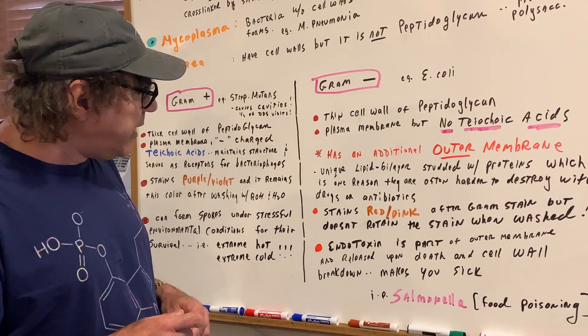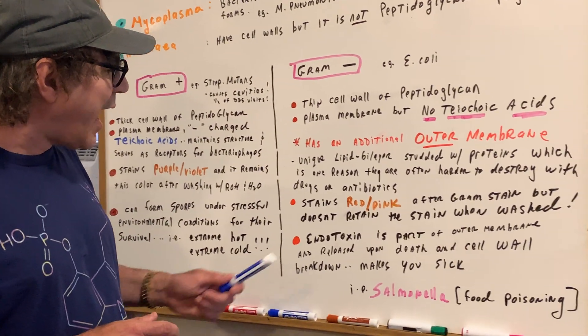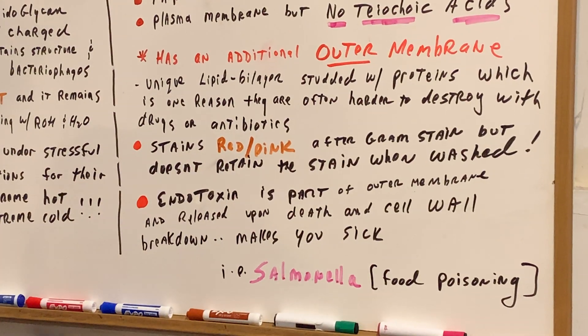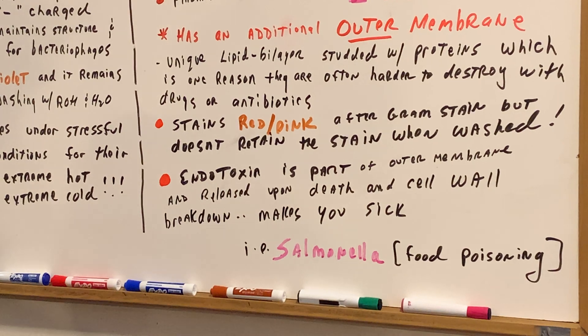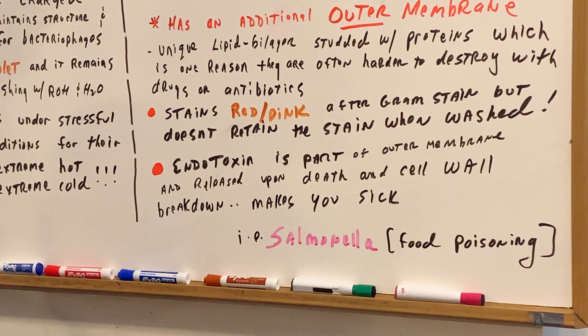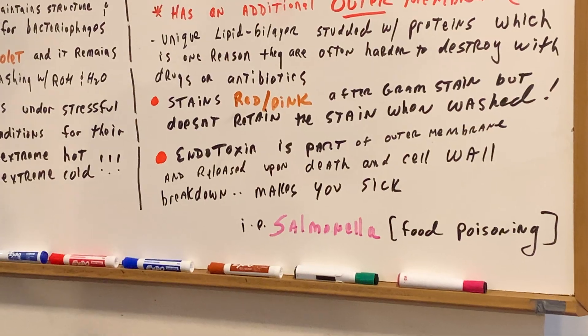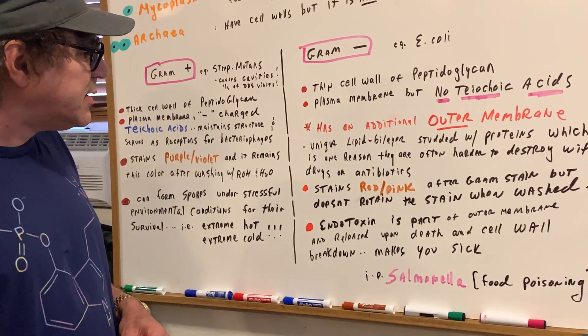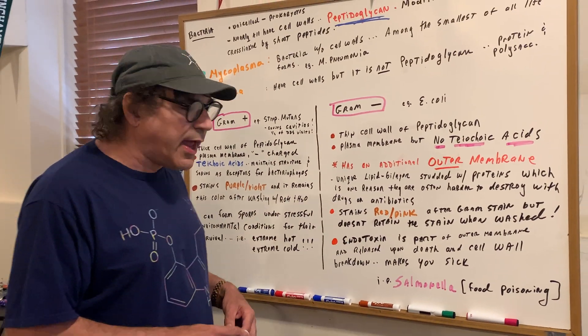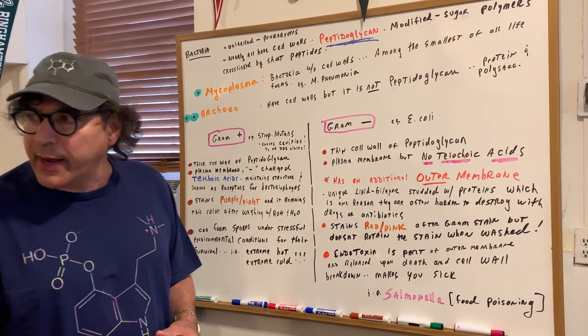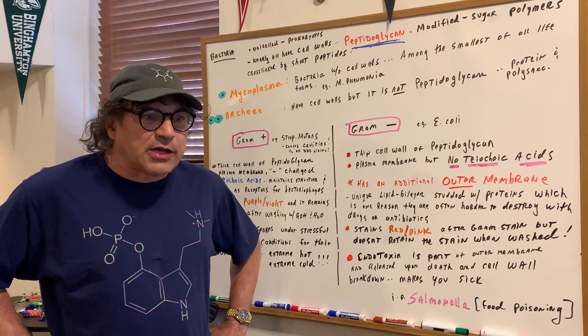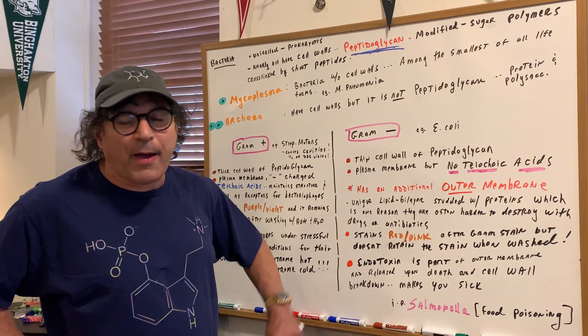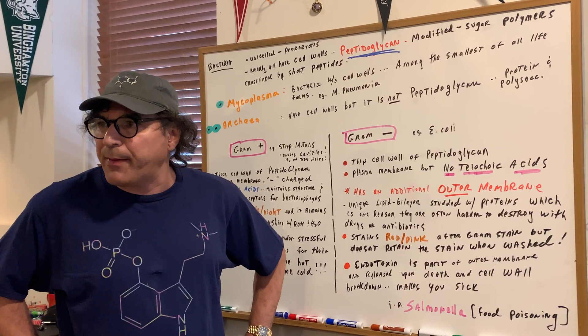And finally, the gram-negative bacteria have endotoxins. The endotoxins is part of the outer membrane, and it's released upon death and cell wall breakdown. And if you remember, things like salmonella that can cause food poisoning and stuff like that, that's due to the endotoxins, which can make you very sick. So, there you have it, you should know some good fundamentals as far as the differences between gram-positive and gram-negative types of bacteria.